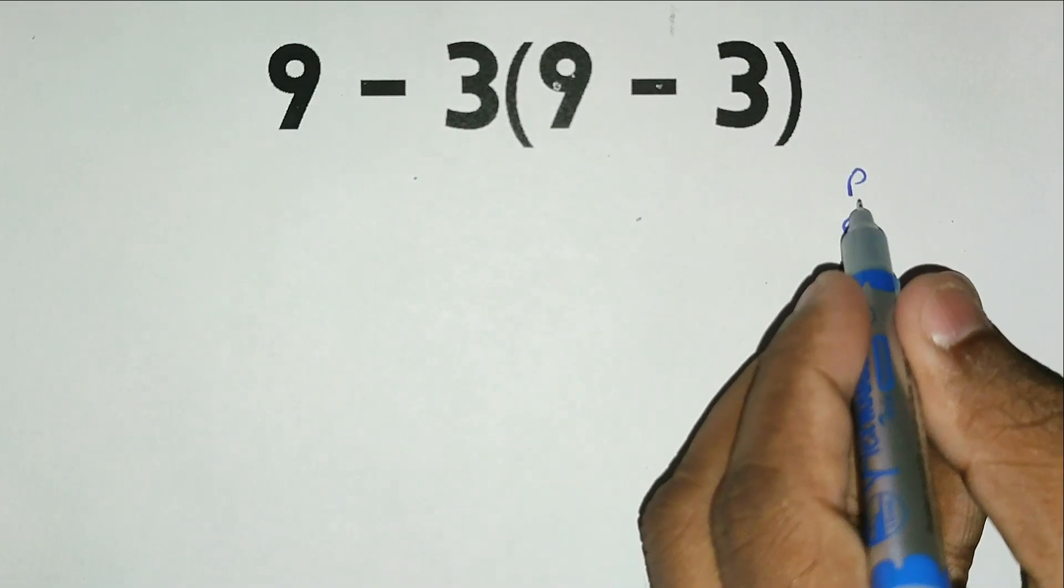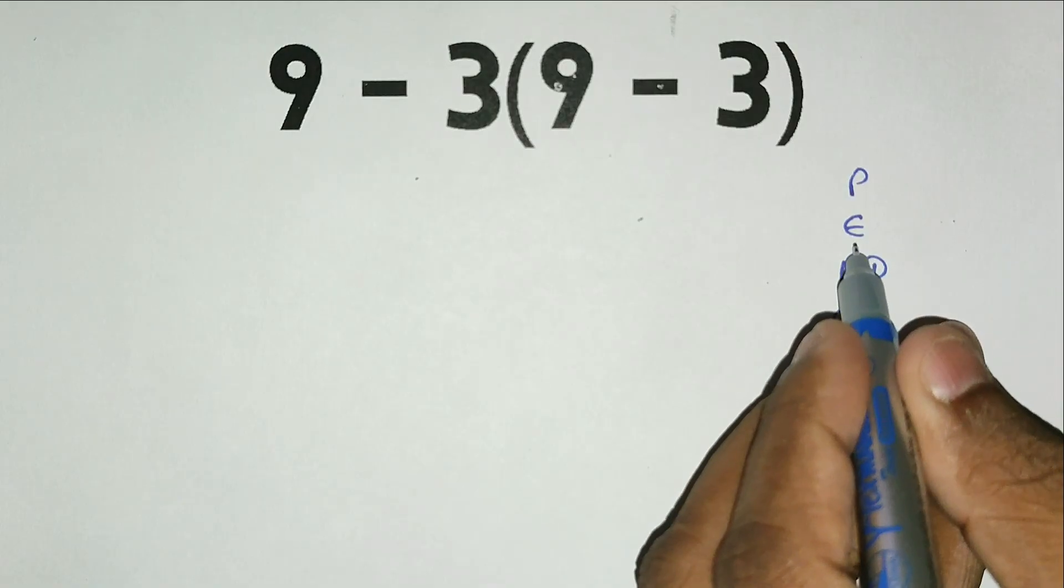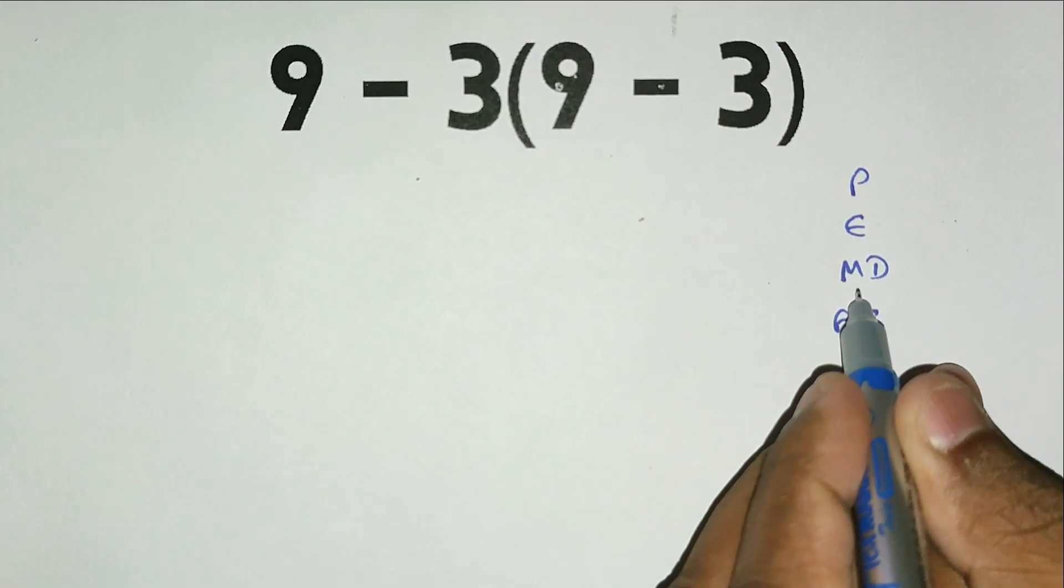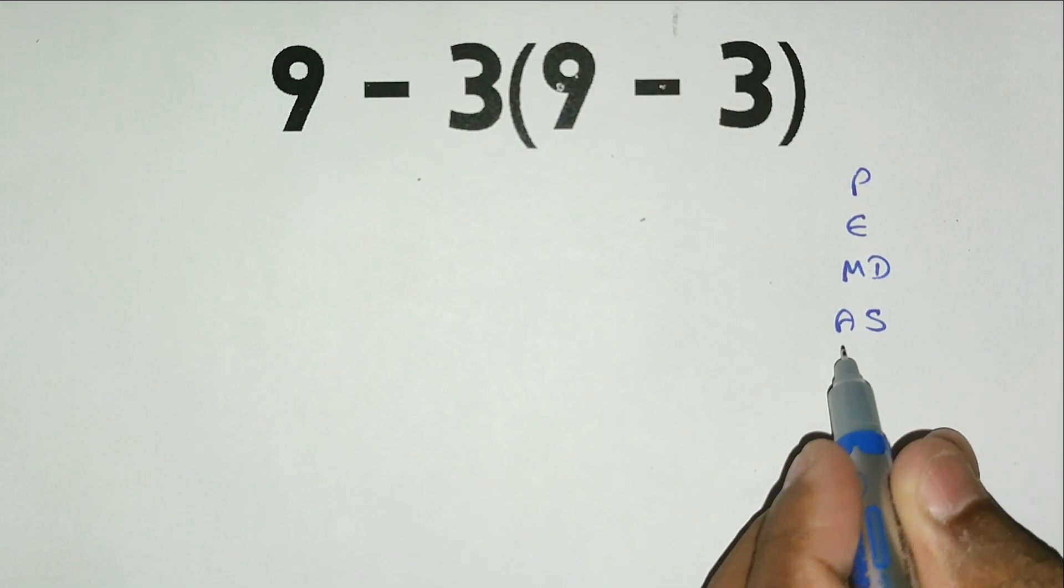In PEMDAS, P stands for parenthesis, E stands for exponents, M stands for multiplication, D stands for division, A stands for addition, and S stands for subtraction.